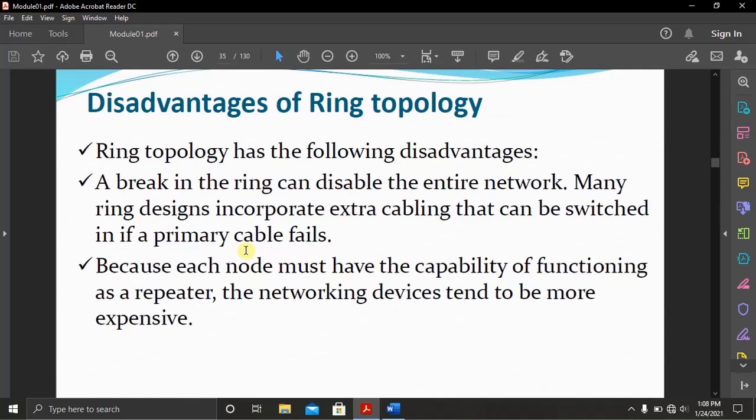Disadvantages of ring topology: ring topology has the following disadvantages. A break in the ring can disable the entire network. Many ring designers incorporate extra cabling that can be switched if a primary cable fails. Because it is a loop, if one cable fails then the entire network fails. Most designers have an extra cable in case one cable breaks so the next one can be plugged in.